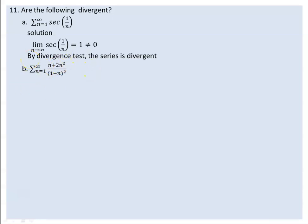So, this is the limit of n squared over 1 minus n squared. This is the limit as n goes to infinity of n plus 2n squared over 1 minus 2n plus n squared. Note that 1 minus n equals 1 minus n, and 1 minus n squared equals 1 minus 2n plus n squared.